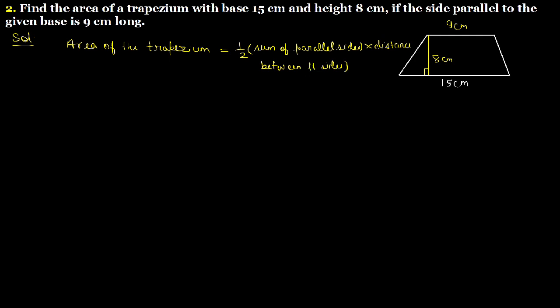These two lines are parallel sides. Sum means 9 plus 15, multiplied by 8.